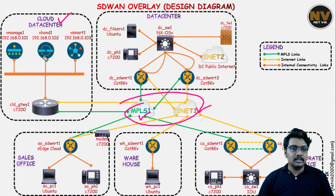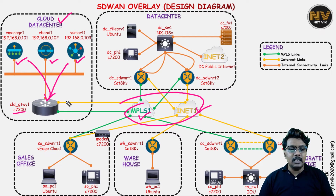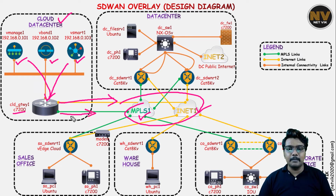In the cloud data center, we are going to host our VManage, Vbond, and Vsmart. Their gateway will be the cloud router which is available — the cloud gateway router, which is going to be a 7200 in our design. The cloud gateway also has connectivity to both the internet and the MPLS, with a link available from that.